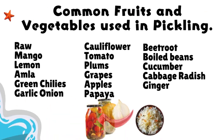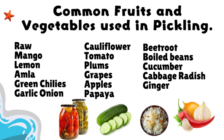Raw materials used for pickling include: cauliflower, beetroot, mango, tomato, boiled beans, lemon, plums, cucumber, amla, grapes, cabbage, radish, green chilies, apples, ginger, garlic, onion, and papaya.